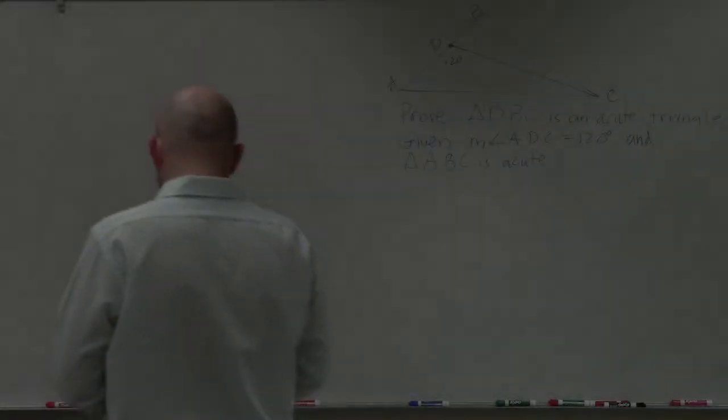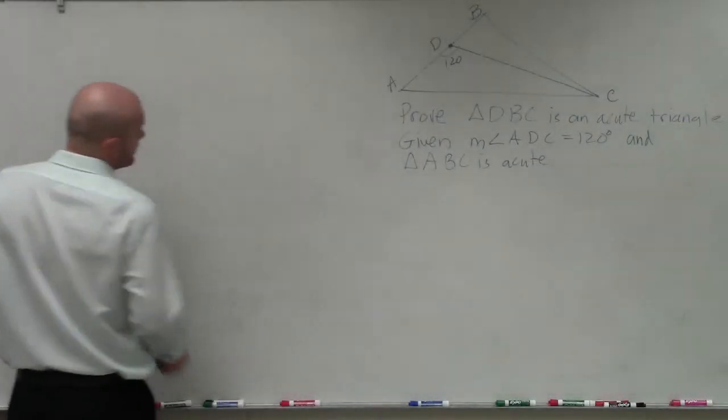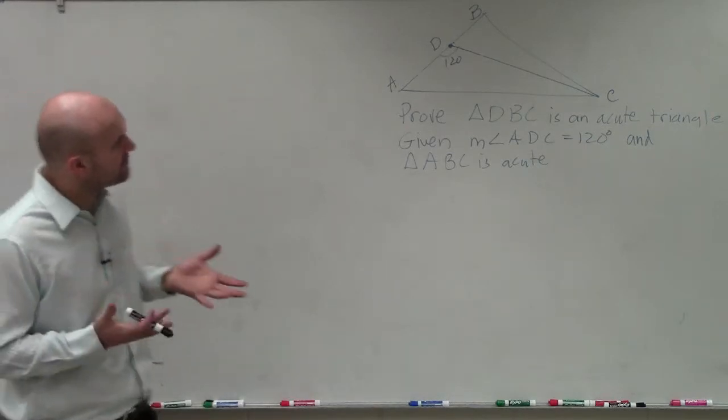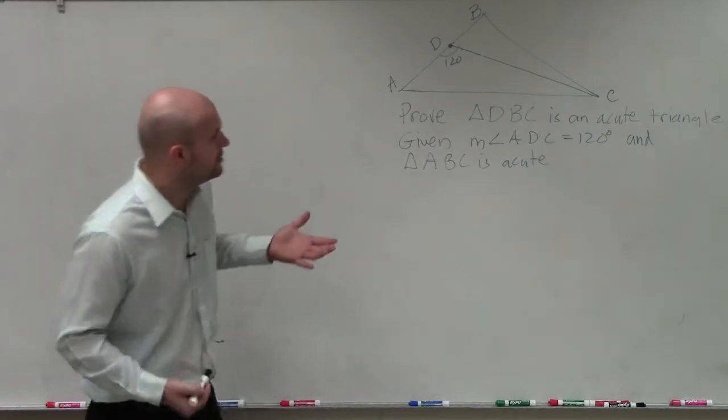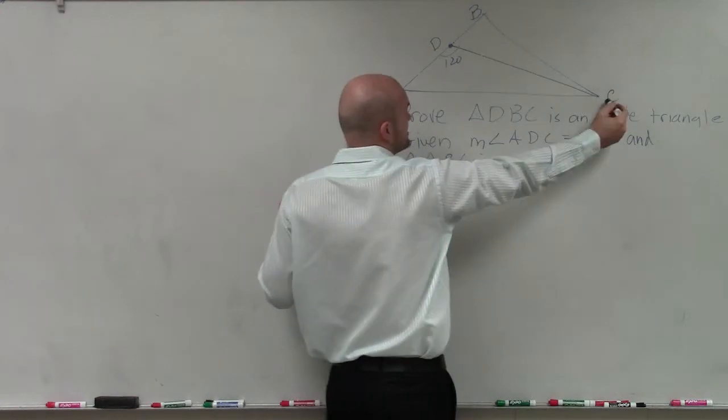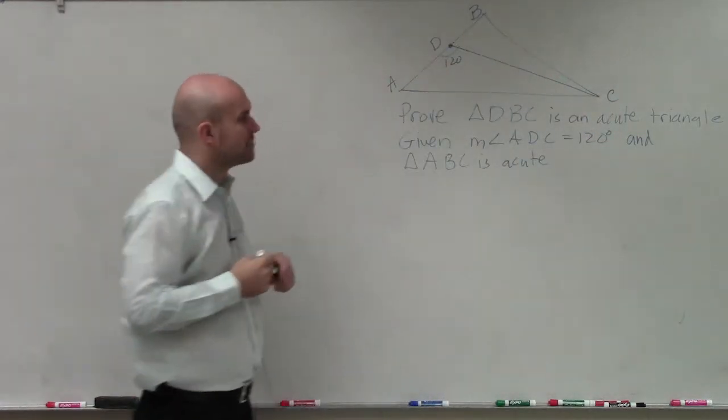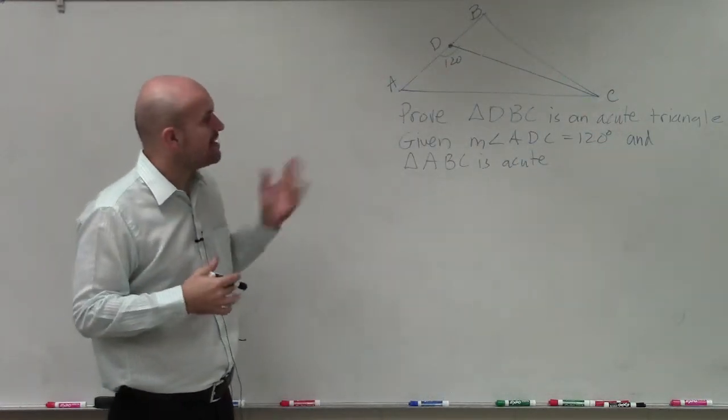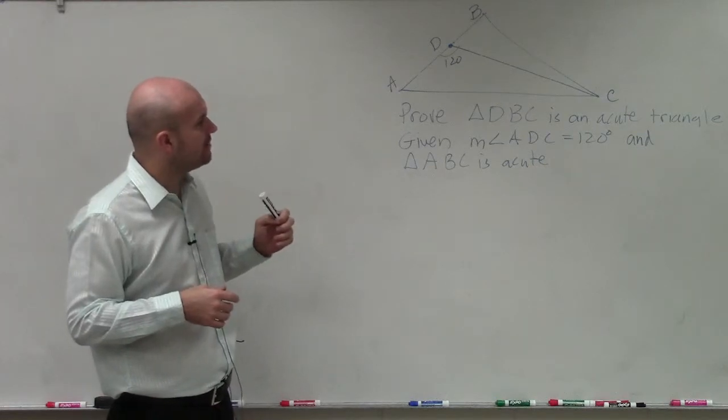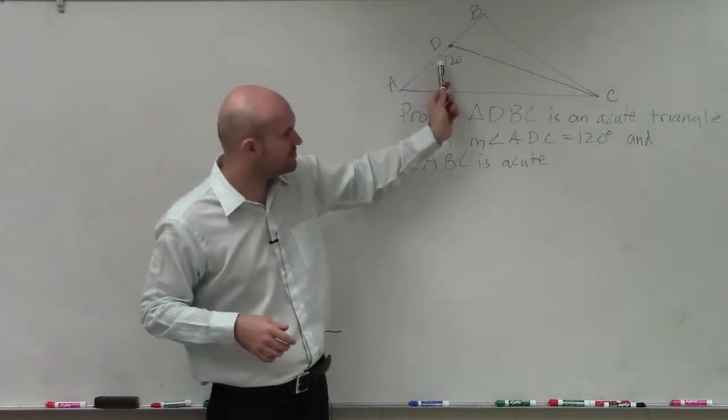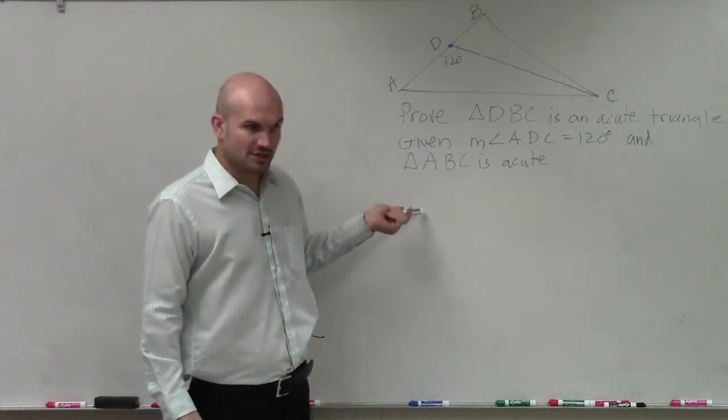As you guys are looking at this, again, when we want to create a proof, we have proof triangle DBC. So we look at D to B to C is an acute triangle, given that measure angle ADC is 120, and triangle ABC is acute.